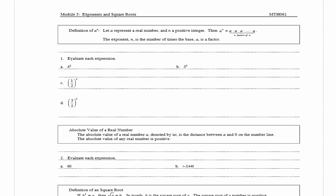In problem one it wants us to evaluate each expression. We have 4 squared or 4 raised to the second power. We could rewrite that as 4 times 4. 4 is the base and it has two factors. And 4 times 4 is equal to 16.